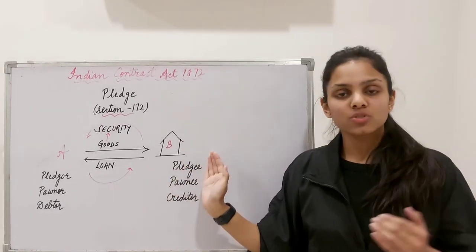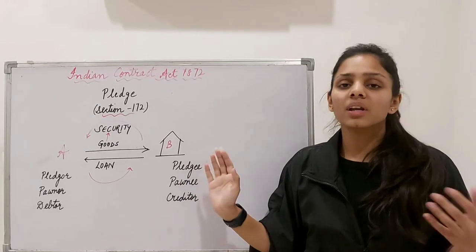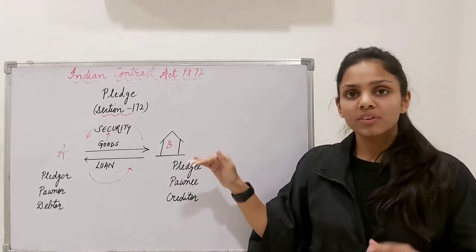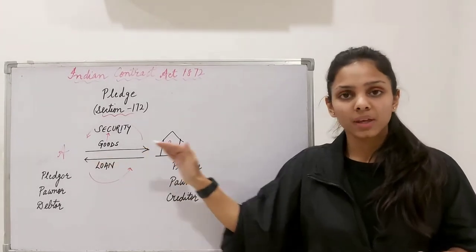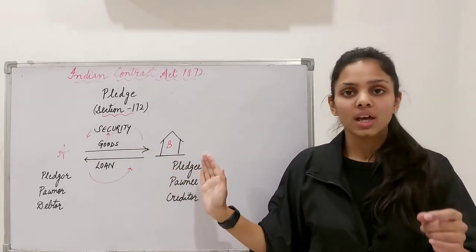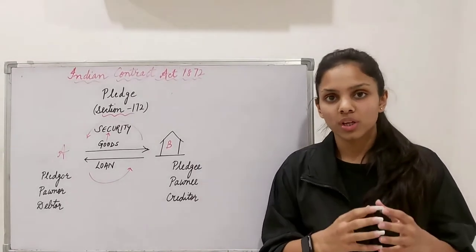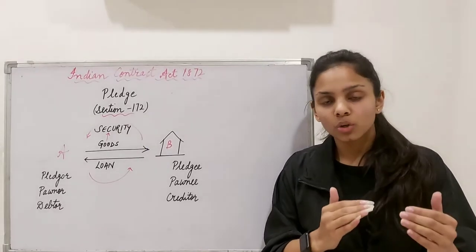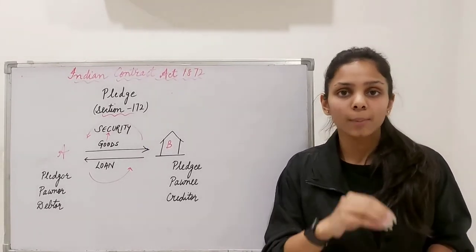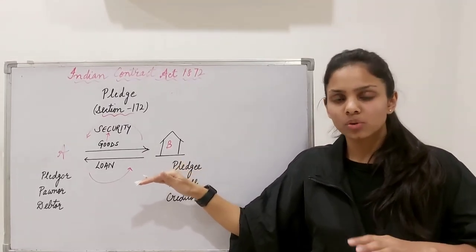Let me explain with an illustration. Here A and B are two people — B can be a money lender, any person, or a financial institution. In this example we have taken a bank. A goes to the bank and says he needs a loan. The bank says okay, we will provide you a loan, but as always, the bank has certain conditions — as per those conditions, you must keep some good, worth approximately the value of the loan, as a security.